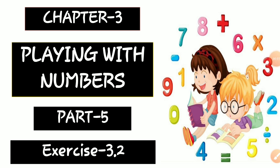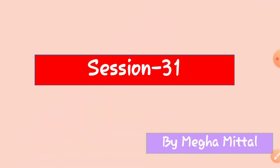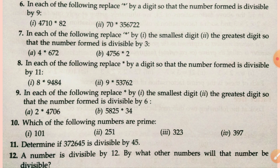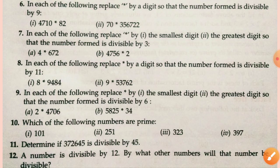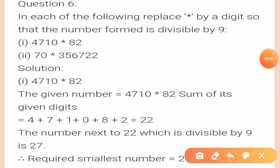Chapter 3, Playing with Numbers, Part 5, Exercise 3.2, Session 31. In this video we are going to complete questions 6 to 14 of Exercise 3.2. Let's start. Question 6: in each of the following, replace the star by a digit so that the number formed is divisible by 9.